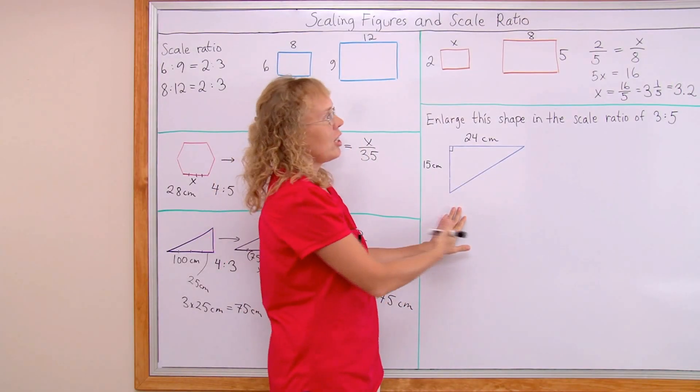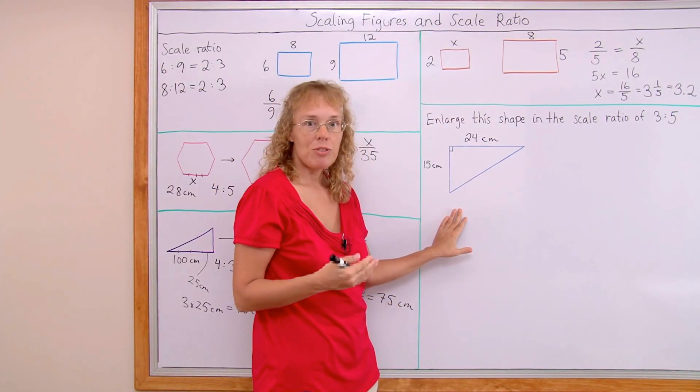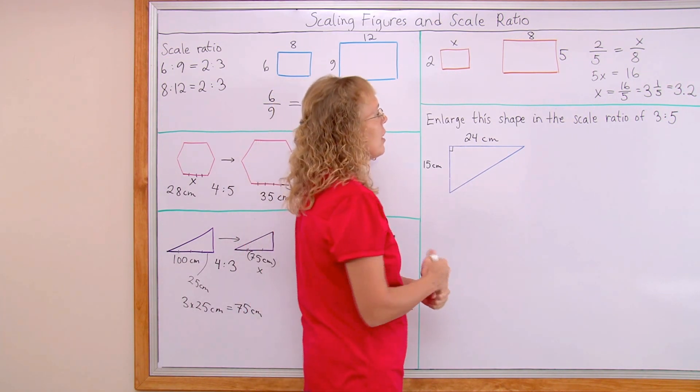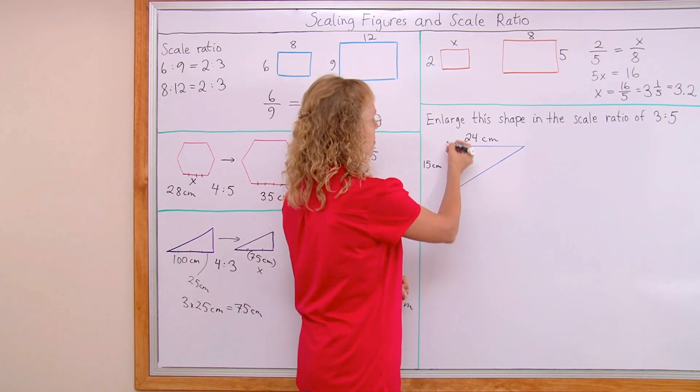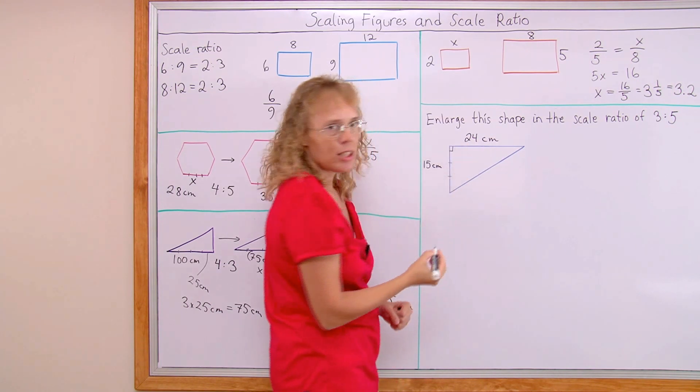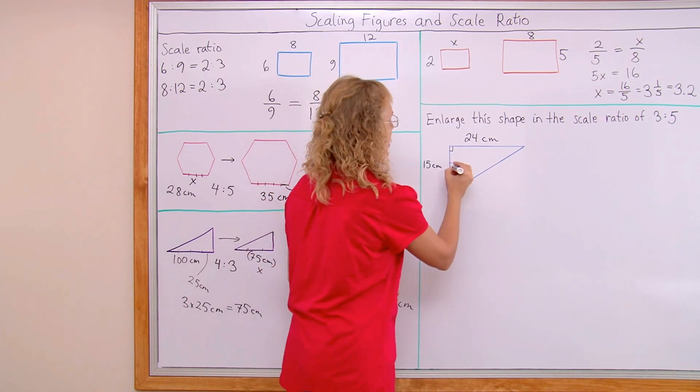Lastly, enlarge this shape in the scale ratio of 3 to 5. It's a right triangle, and I can simply think of this side having 3 parts, so to speak. Of course, each part is then 5 centimeters here.